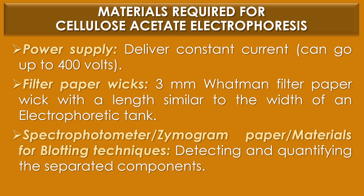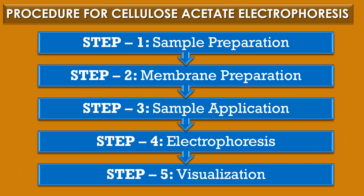The fifth material is filter paper wicks. A 3 mm Whatman filter paper wick with a length similar to the width of the electrophoretic tank is used. Finally, a spectrophotometer, densitometer paper, or materials for blotting technique are required for detecting and quantifying the separated components.